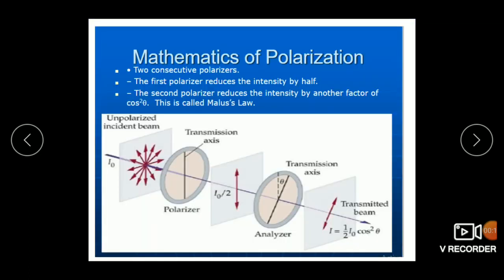Suppose unpolarized light having intensity I₀ is incident on the first polarizer whose optic axis is vertical, so only vertical vibrations come out. The intensity of the first polarizer output is I₀/2, meaning half the intensity of the incident light. Now another analyzer whose axis makes angle theta with the first one gives intensity equal to (I₀/2)cos²θ. This is the mathematics of polarization.